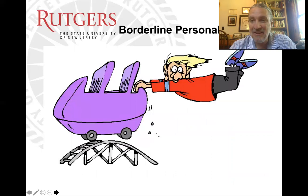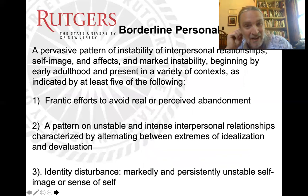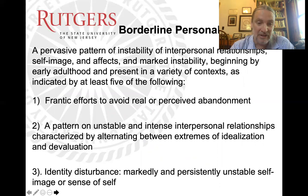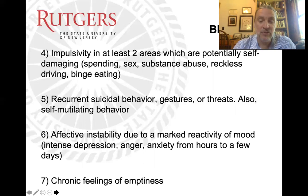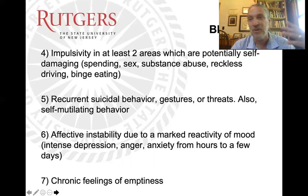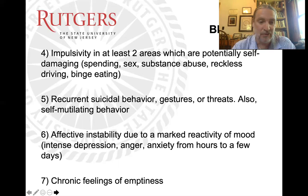We're going to start by talking about borderline personality disorder. A good metaphor is the roller coaster — lots of very intense ups and downs. The formal definition is a pervasive pattern of instability of interpersonal relationships. You need five criteria for the diagnosis, including frantic efforts to avoid real or perceived abandonment, unstable and intense relationships, an unstable sense of self, impulsivity, recurrent suicidal behaviors and self-mutilating behavior, affective instability, and chronic feelings of emptiness. That emptiness is the metaphor — it's like a hole they try to fill with anything: addictions, sex, other people.